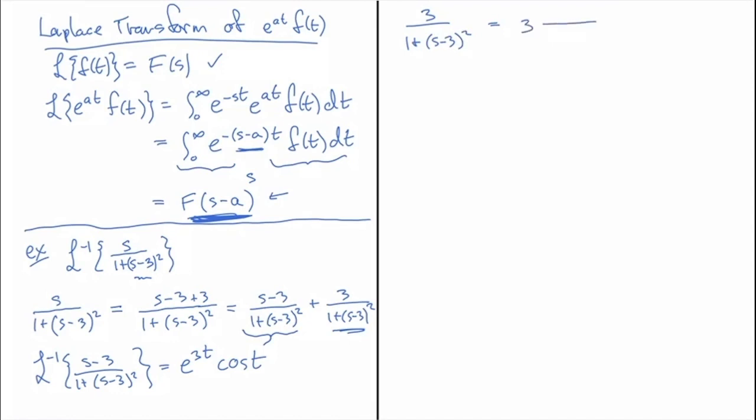and then I need a coefficient in the numerator, 1 over (1 plus (s minus 3) squared). Now if there's no s in the numerator, that means there's a constant in the numerator, and that makes this a shifted version of sine of t transformed. And so this should look like 1 over (1 plus s squared)